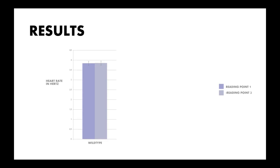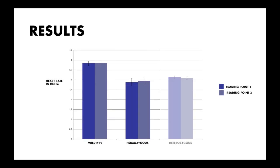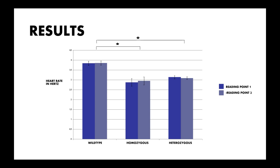As expected, homozygous breakdance mutants exhibit a significantly reduced heart rate compared to wild-type fish. In addition, heterozygous mutants display a reduction of similar significance. In contrast, heart rates do not differ significantly in homozygous and heterozygous mutants.